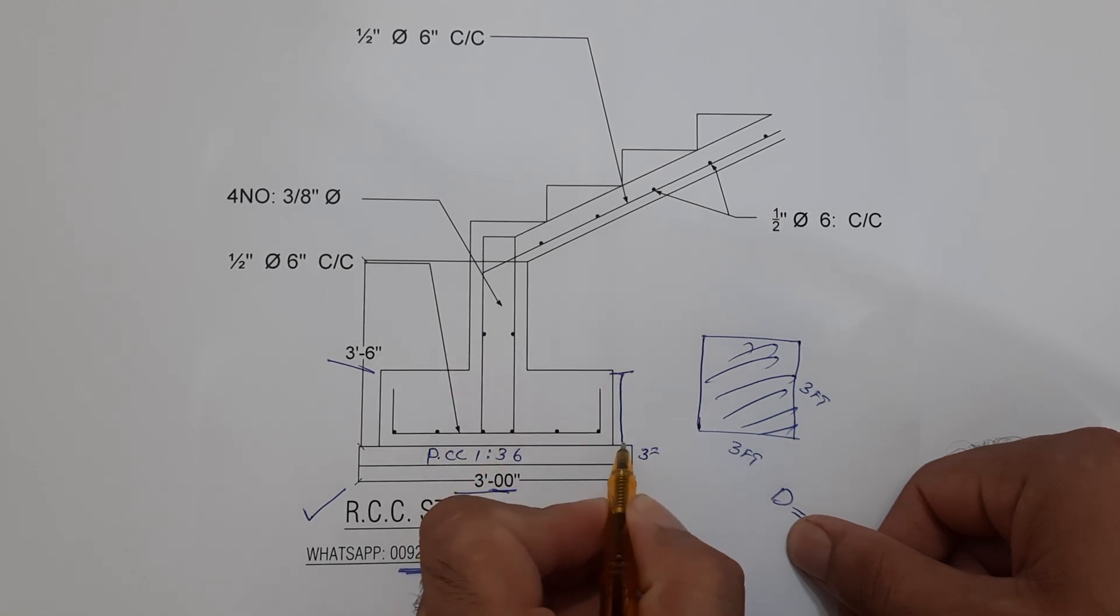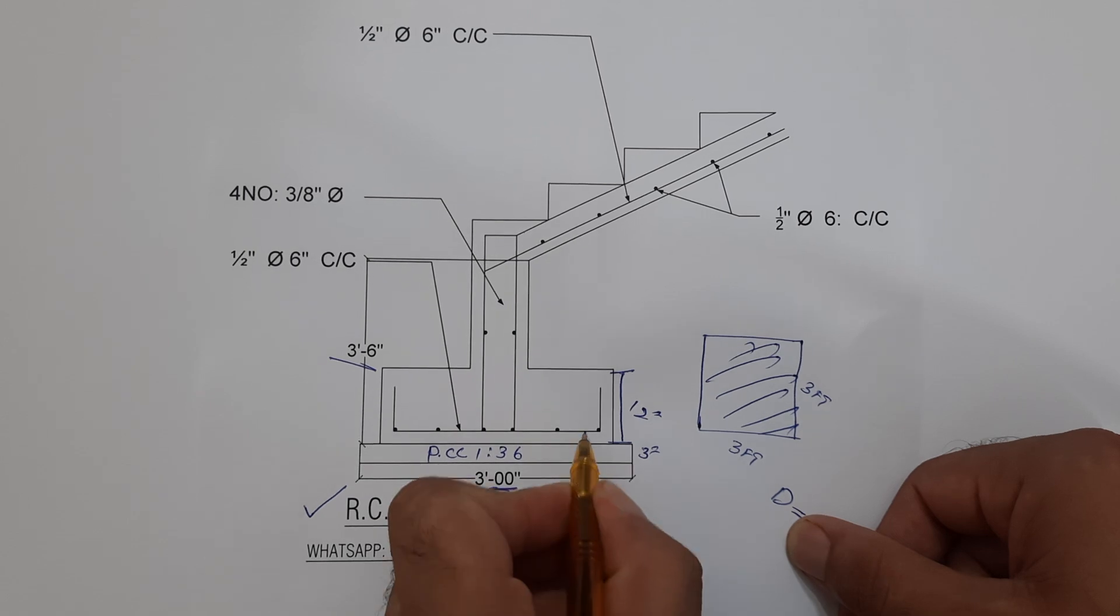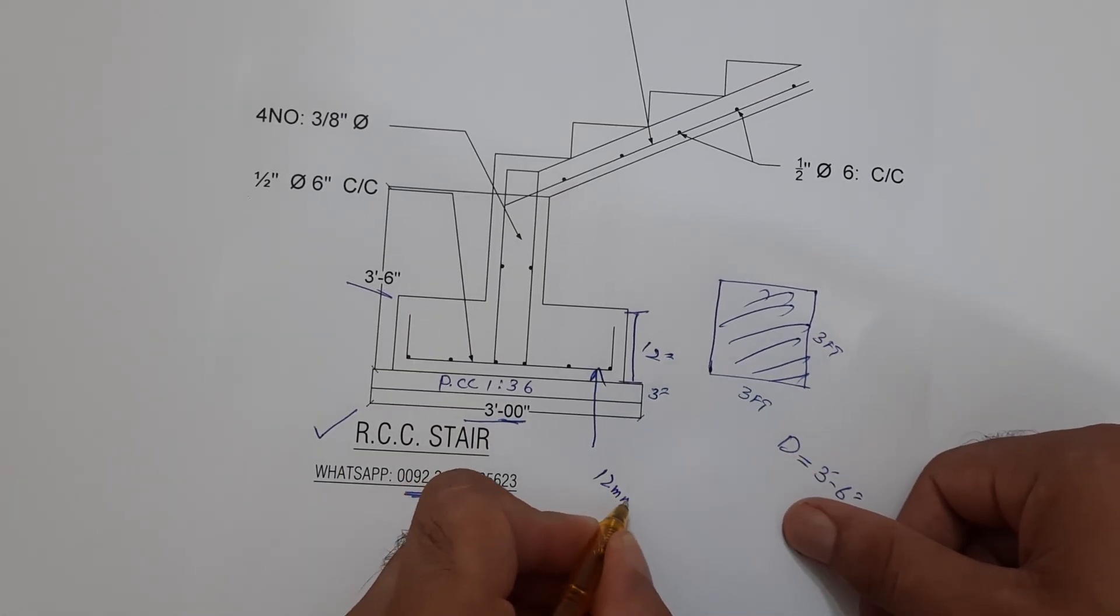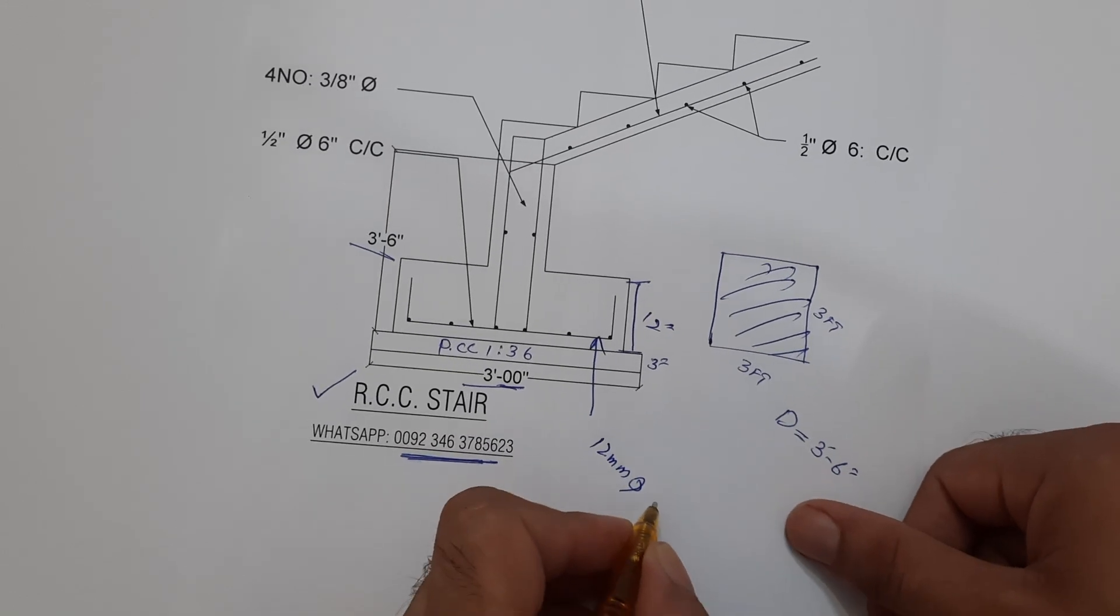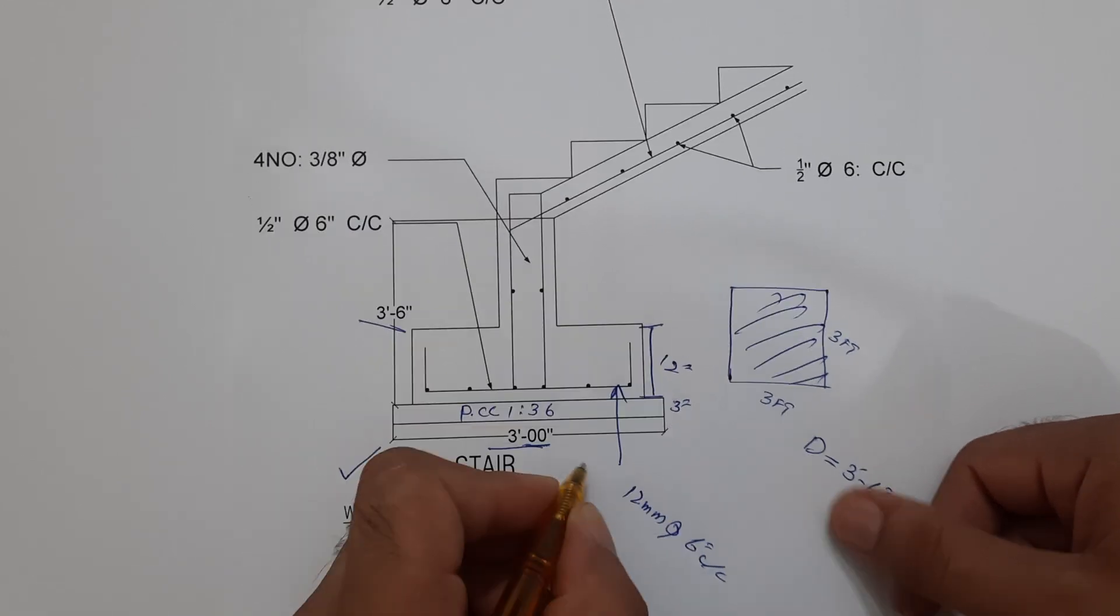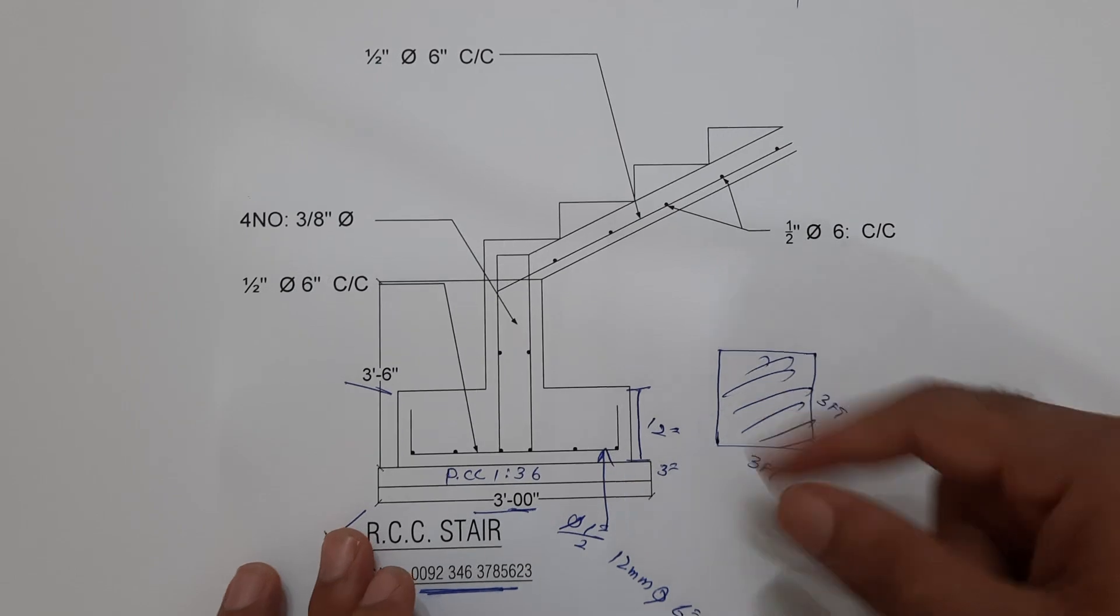Inside stair reinforcement you can see, so use 12 mm dia of steel rod with the spacing of six inches C/C or you can see half inch dia of steel. You can use for both, okay.